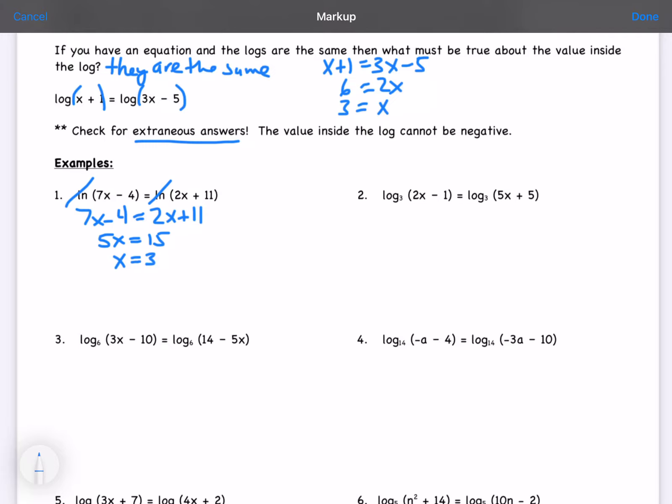When we plug in 3, we want to make sure that it is positive. So it's 17, which means the x equals 3 checks out. We plugged it into the top one.